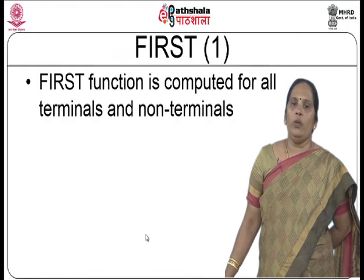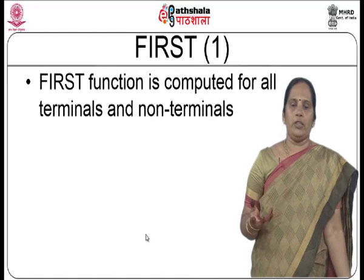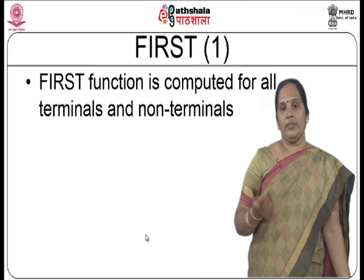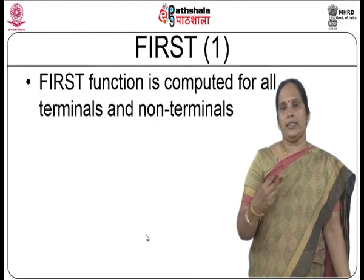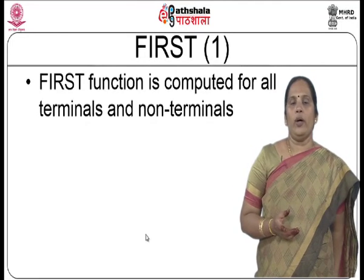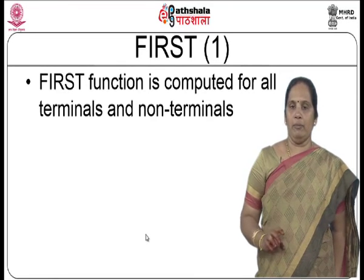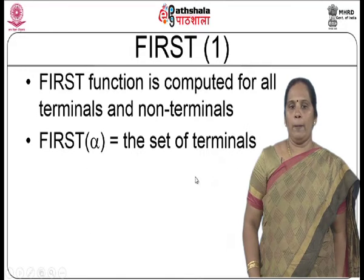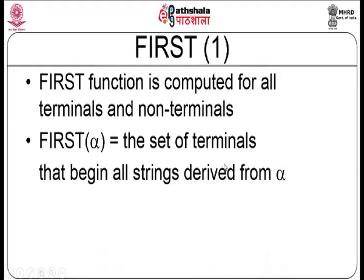First of 1 is used by the LL(1) parser. A first of k is also available — for example, first of 3 gives the first 3 symbols of a string. First of 1 indicates what can be the possible first symbol in a string given a particular non-terminal. First of alpha equals the set of terminals that begin all strings derived from alpha, where alpha is a combination of terminals and non-terminals.